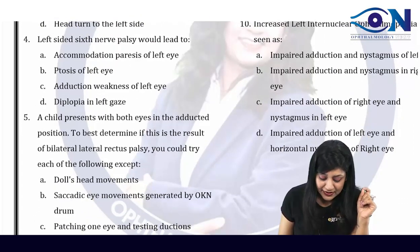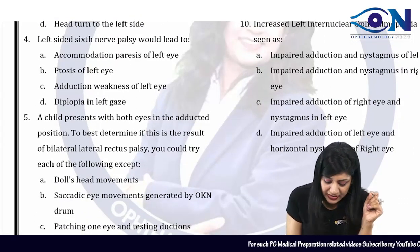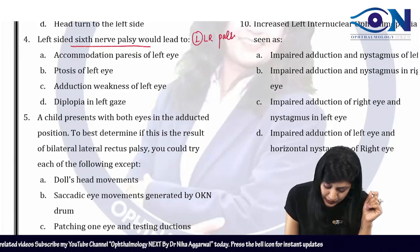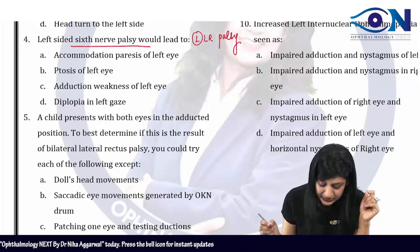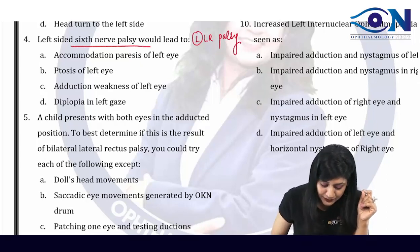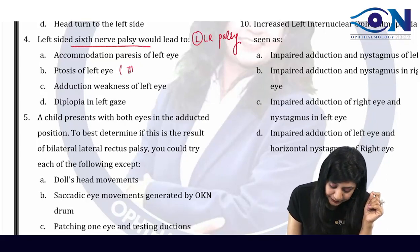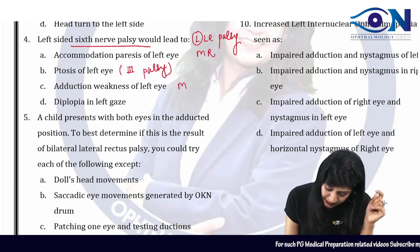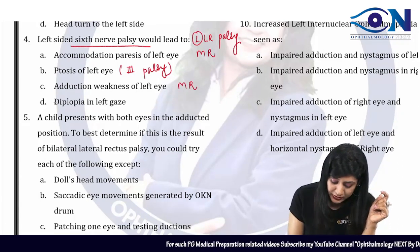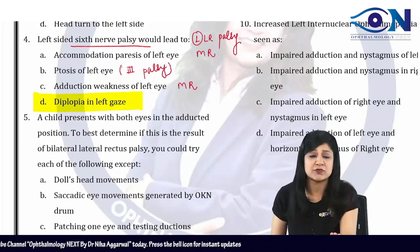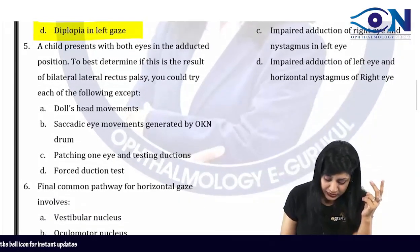Coming to the next one: left-sided sixth nerve palsy. Sixth nerve palsy means left lateral rectus palsy. Left lateral rectus palsy — you will not have accommodation paresis of the left eye, you will not have ptosis (ptosis occurs in third nerve palsy), accommodation paresis is by the medial rectus, and adduction weakness is again by the medial rectus. So this will cause diplopia in the left case, because diplopia is always maximum when the patient looks in the direction of action of the paralyzed muscle.